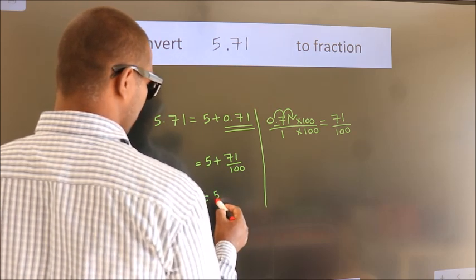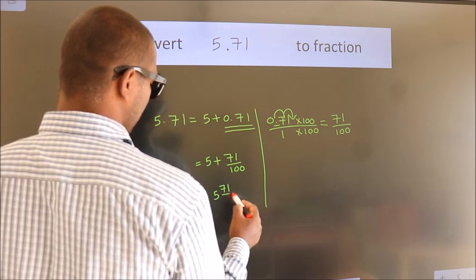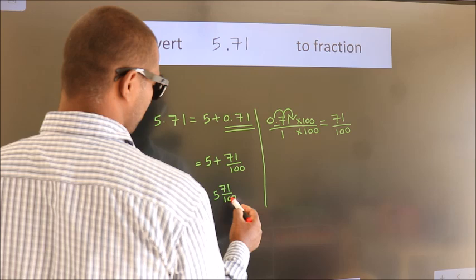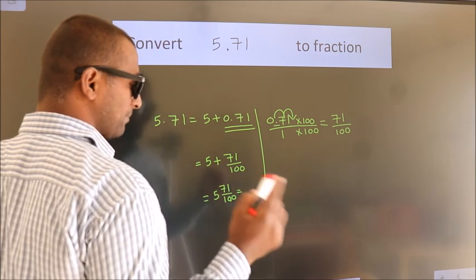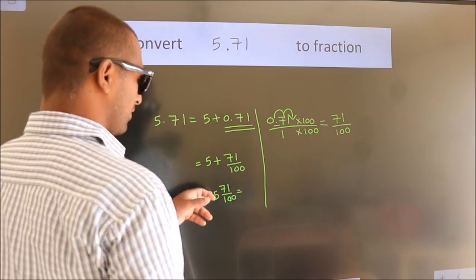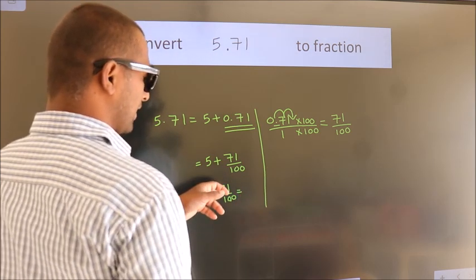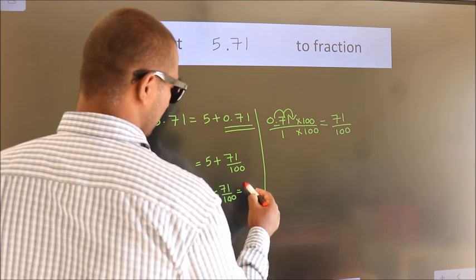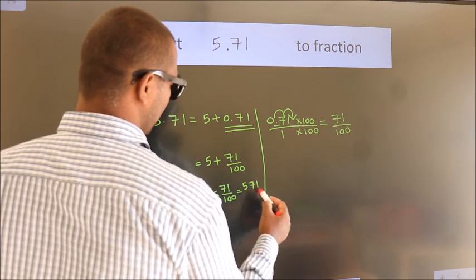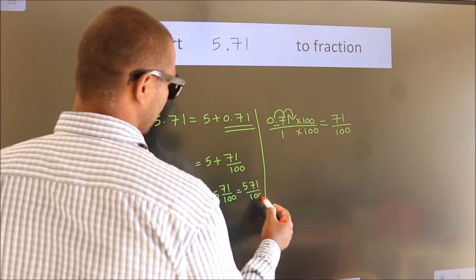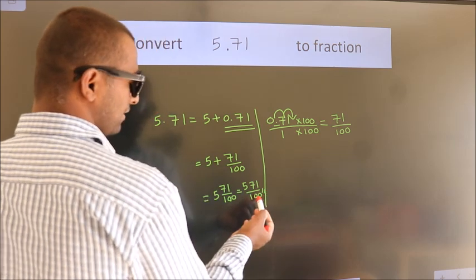In mixed fraction it is 5 and 71 by 100. And in improper fraction it is 5 into 100: 500 plus 71. 571 by 100 is our fraction.